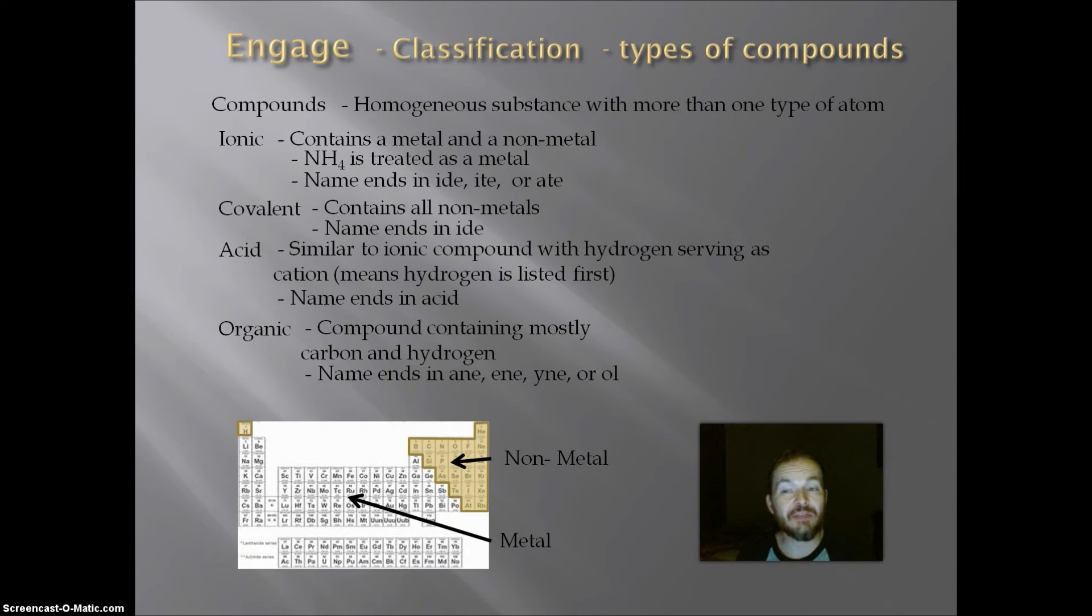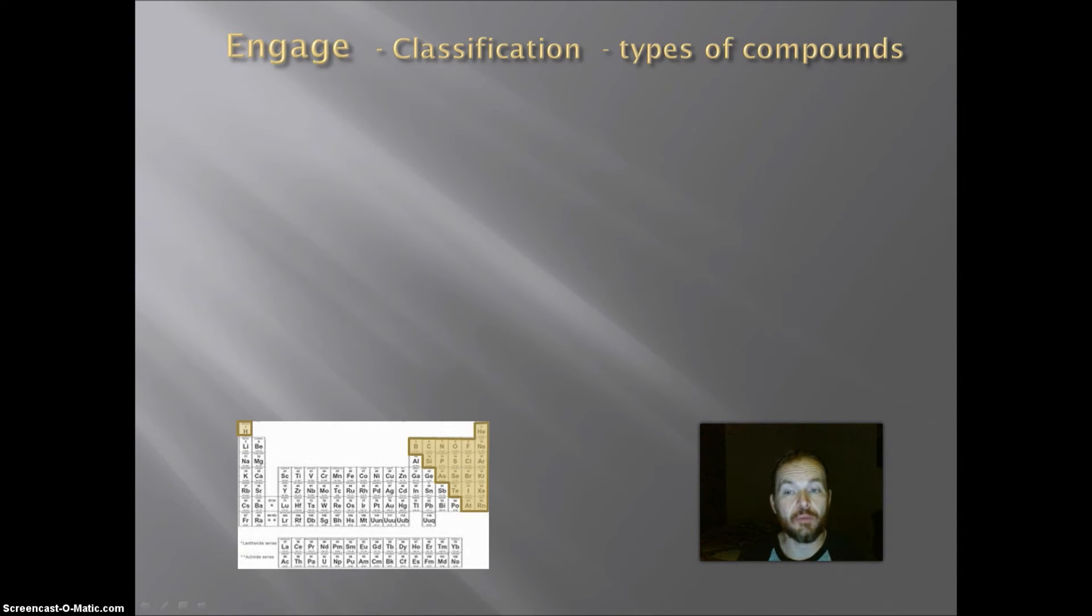So let's try to classify a few compounds and see what we can come up with. First practice, sulfuric acid with the formula of H2SO4. Well, if I look at it, the name ends in acid. And if I look at the formula, hydrogen is listed first. Both of those characteristics mean that that compound is an acid.